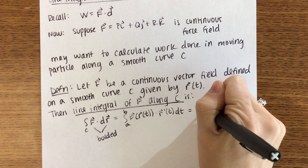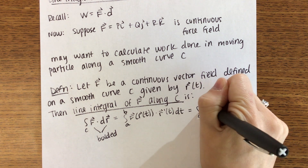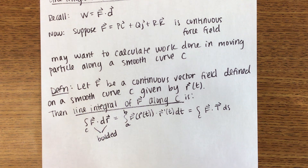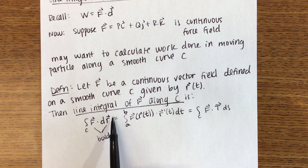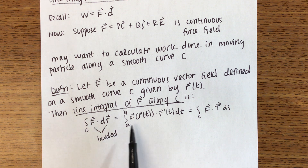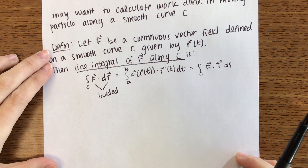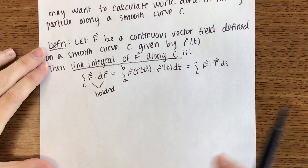Another way you will see this is F dot T, DS. This is the most common notation. So that's going to tell you that you need to use this formula for the line integral along C. We're just going to do some examples.